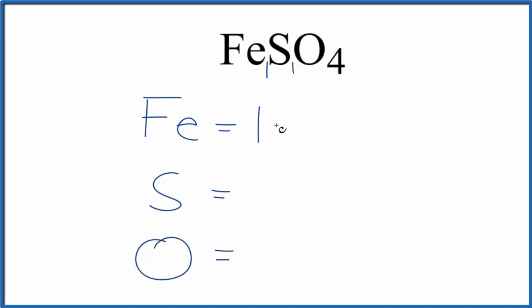Sulfur, we have one of those, and then the oxygen we have this subscript of four, so we have four oxygen atoms. So the total number of atoms in the FeSO4 here is four plus one plus one, that's six. So we have six total atoms.